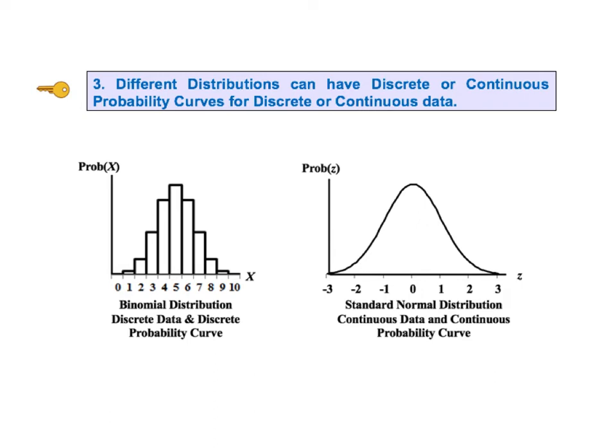Continuous data are also called measurement data. Common examples are things that are measured like length, weight, pressure, etc. The probabilities for continuous distributions are infinitesimal points on smooth curves.